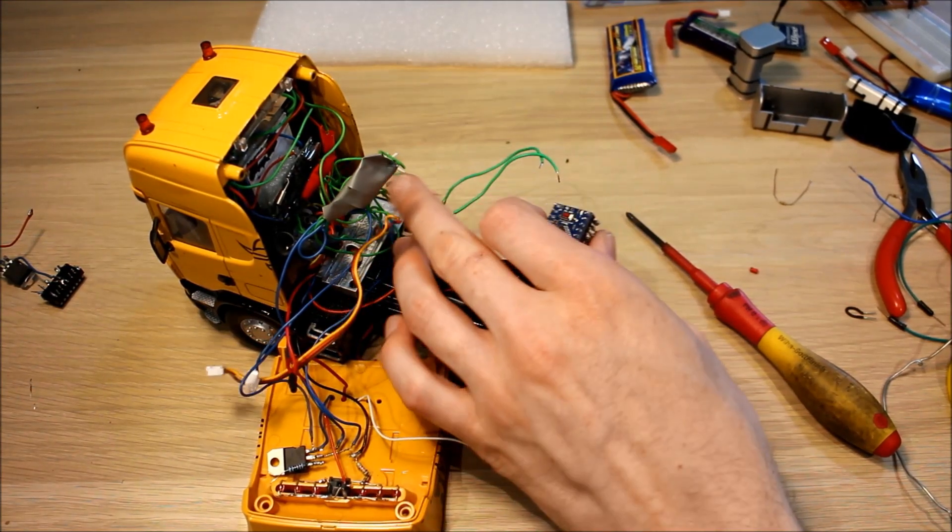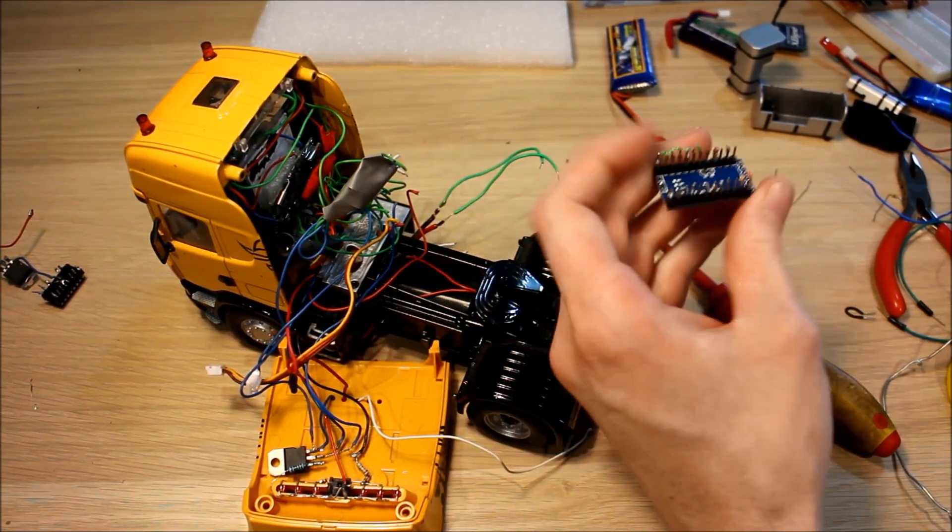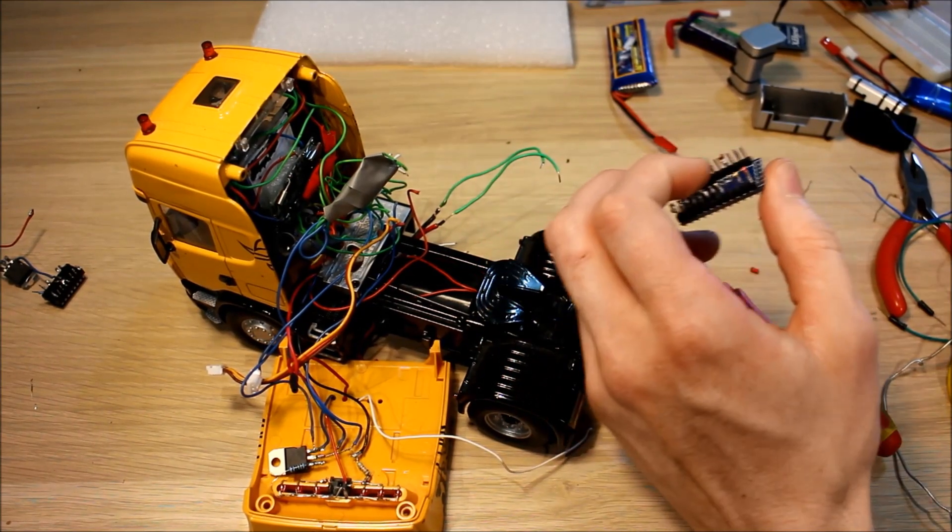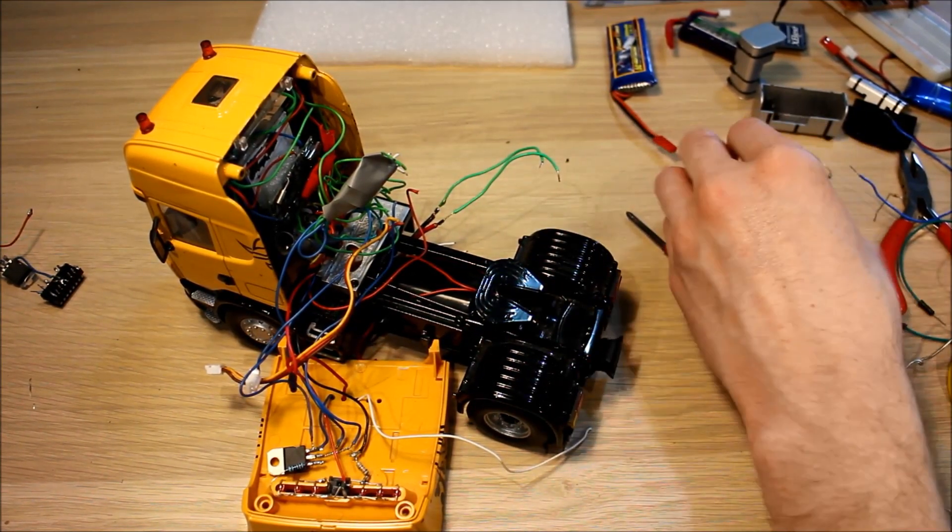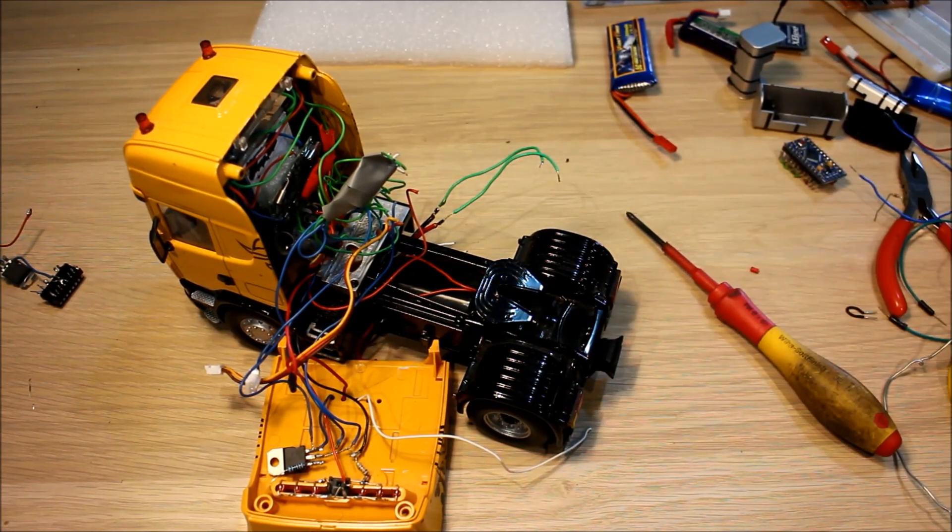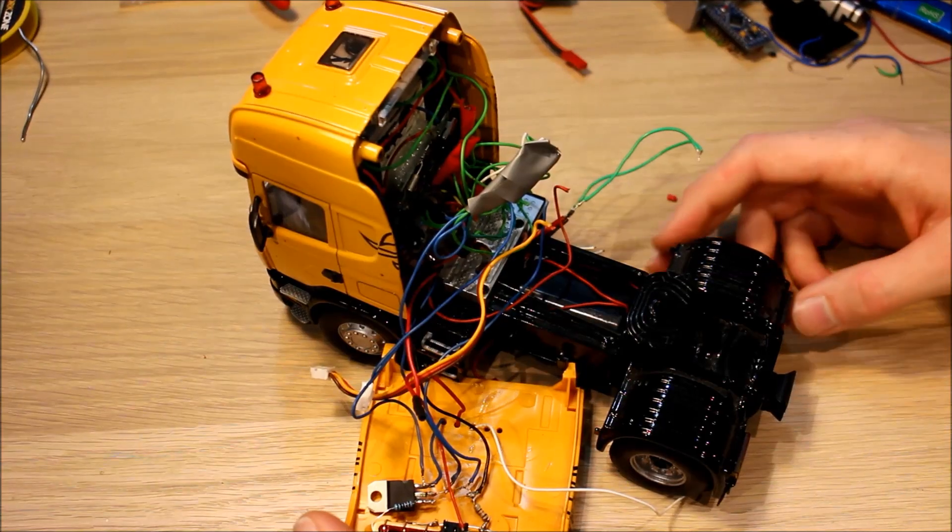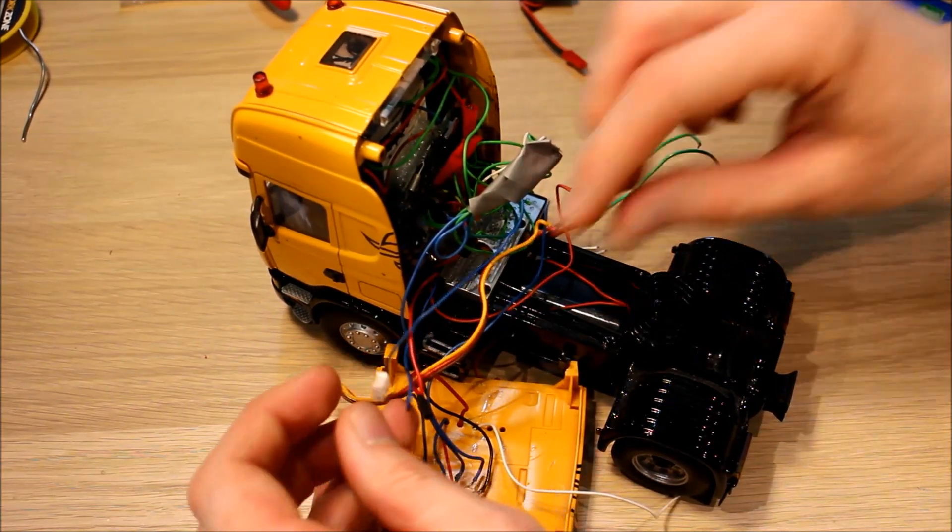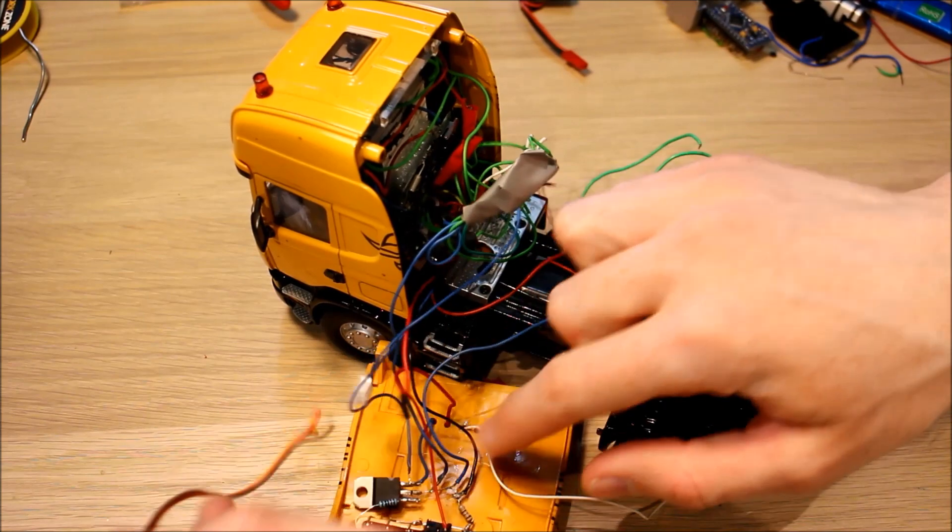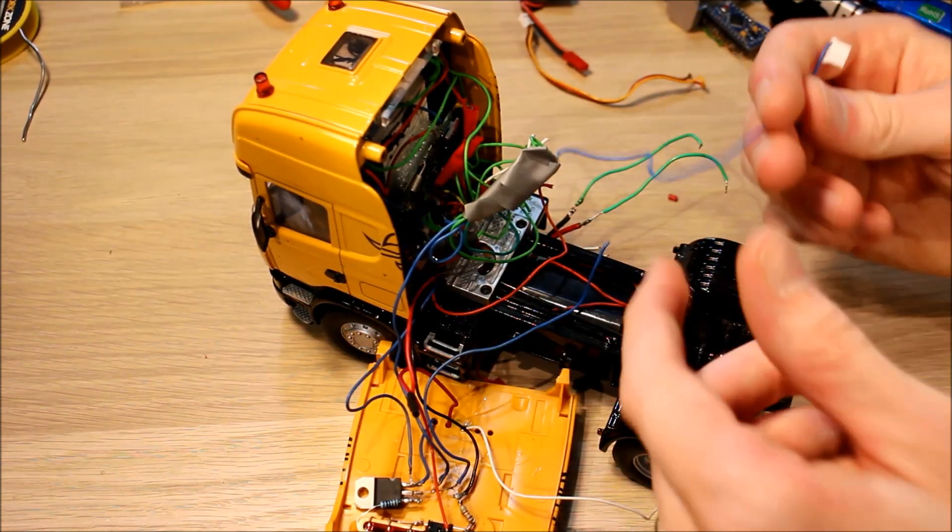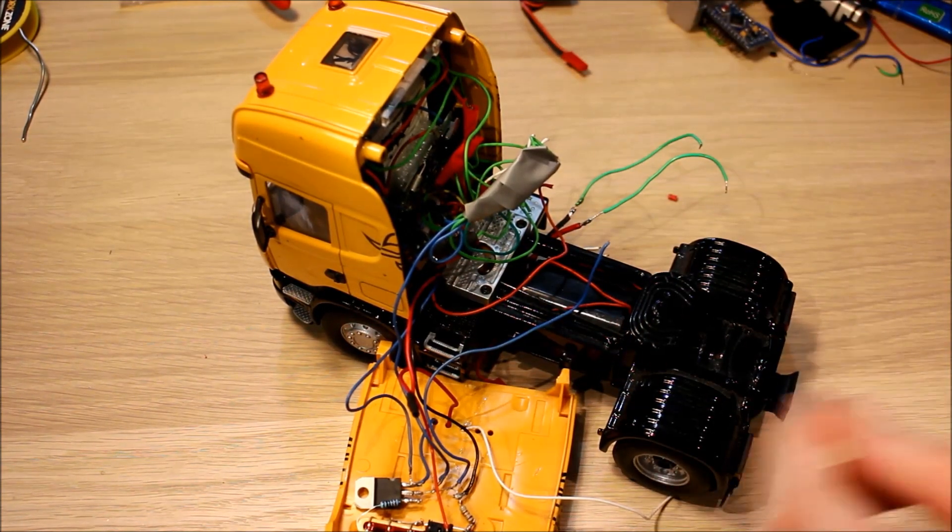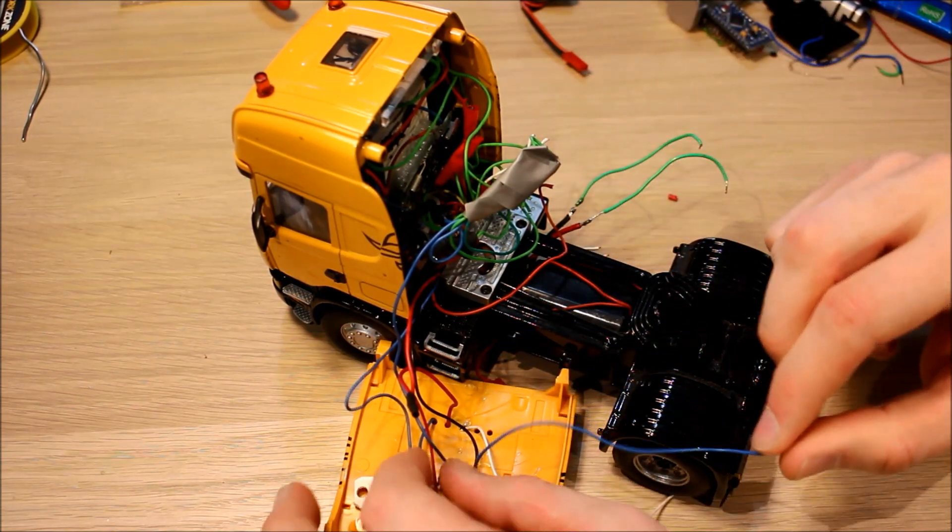As you can see there, we pretty much used every pin on this Arduino, so obviously we're going to need two Arduinos to do the new system because the NRF24 module will require a lot more pins. So we'll start picking through these wires here. That's part of the XBee so we can get rid of that.